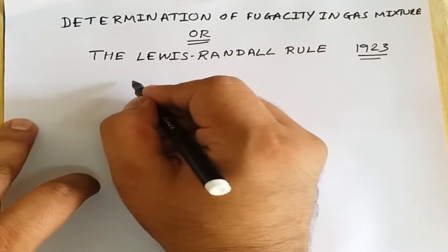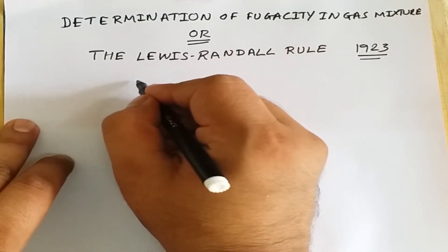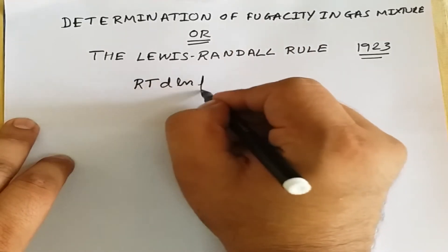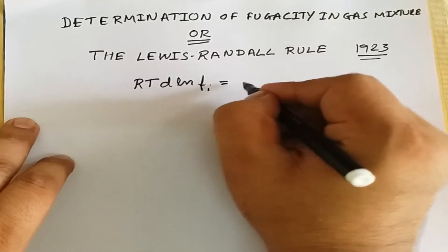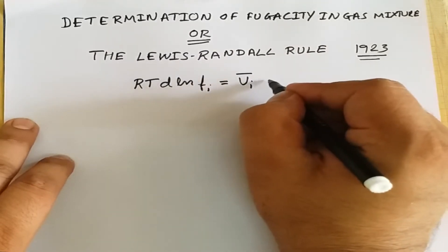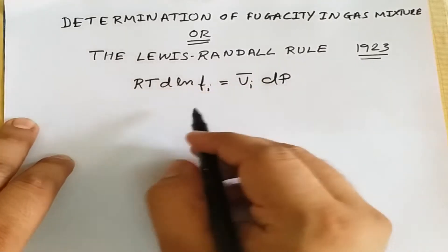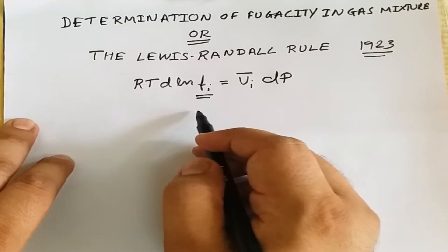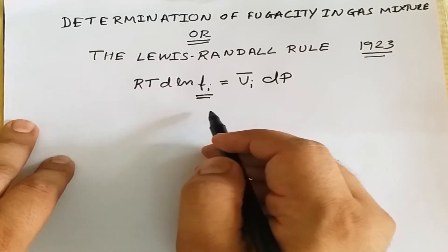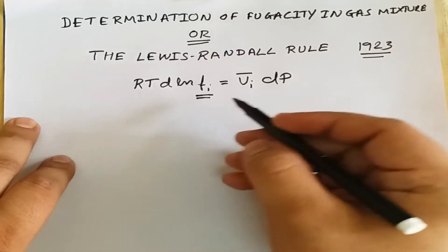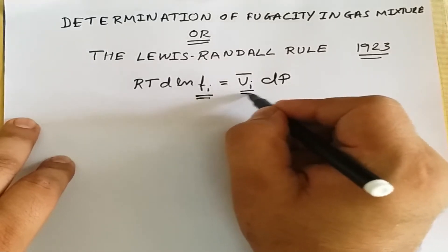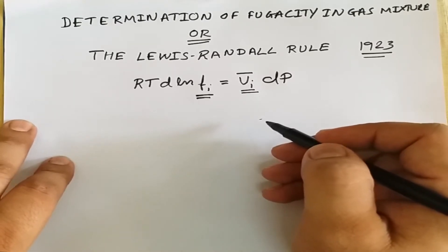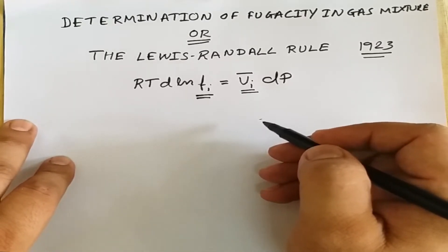As we have already seen in the graphical method, RT d(ln f_i) is equal to v_i_bar dp, where f_i is the fugacity of the i-th constituent present in the mixture and v_i_bar is the partial molar volume of the i-th constituent present in the mixture.